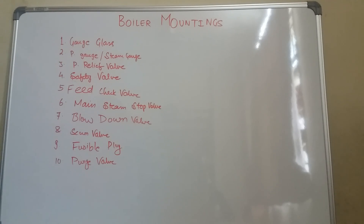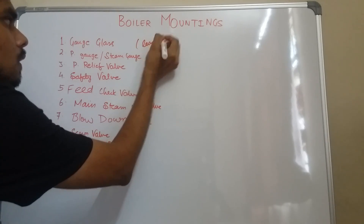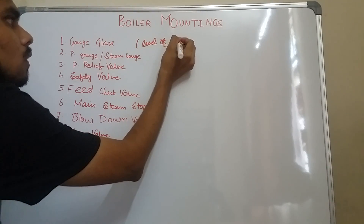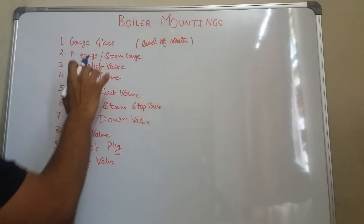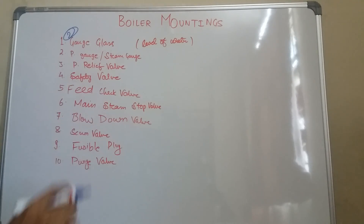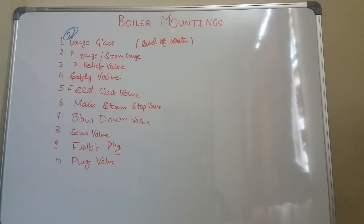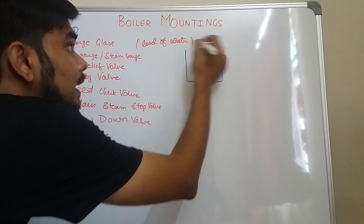First of all, what is a gauge glass? A gauge glass is used to indicate the level of water. These are present two in numbers. Why two? Suppose there is an anomaly in the readings of one gauge glass, so we can check and verify it from the other gauge glass.